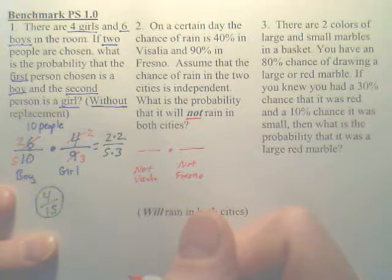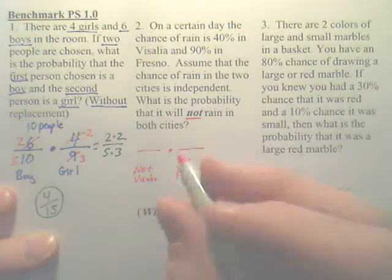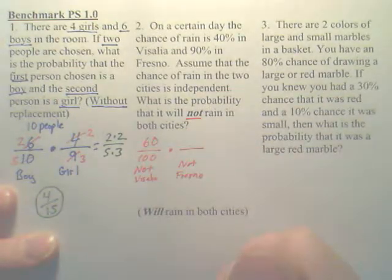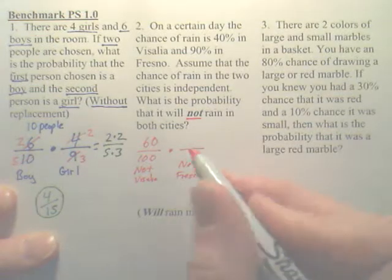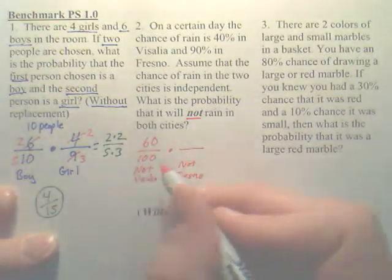So what would not Visalia be? Do you understand it's forty for it to rain? So that would be sixty for it not to rain? Now, are we okay? Is this one going to decrease or is this also out of a hundred?